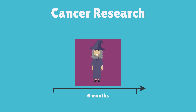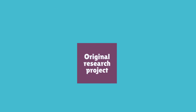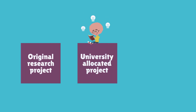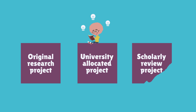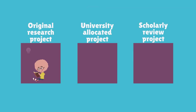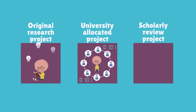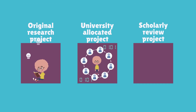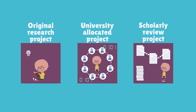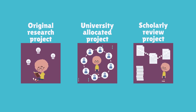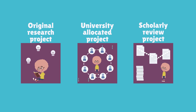However, we appreciate that not all students will want to undertake an original research project. So despite this being our preferred pathway to ensure that your project is aligned with your individual research interests, we also have other research streams on offer, including a university-allocated project and a scholarly review. A university-allocated project will usually involve working with a pre-established research team to interrogate existing datasets with pre-approved ethics, whilst the scholarly review project requires you to complete a structured evidence synthesis of the literature on a topic of your choosing.